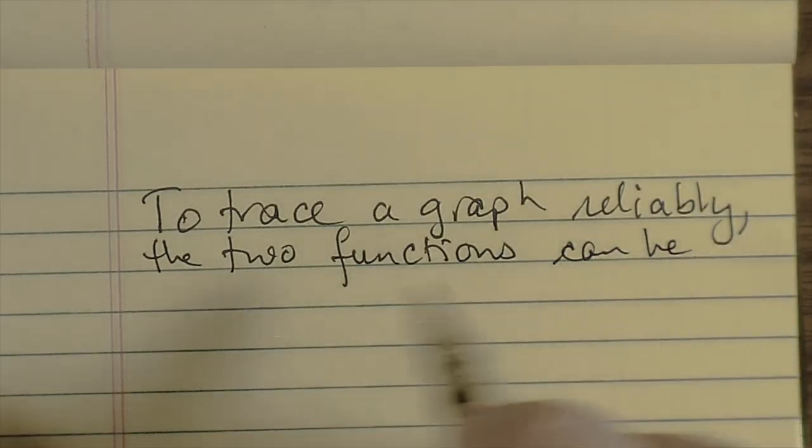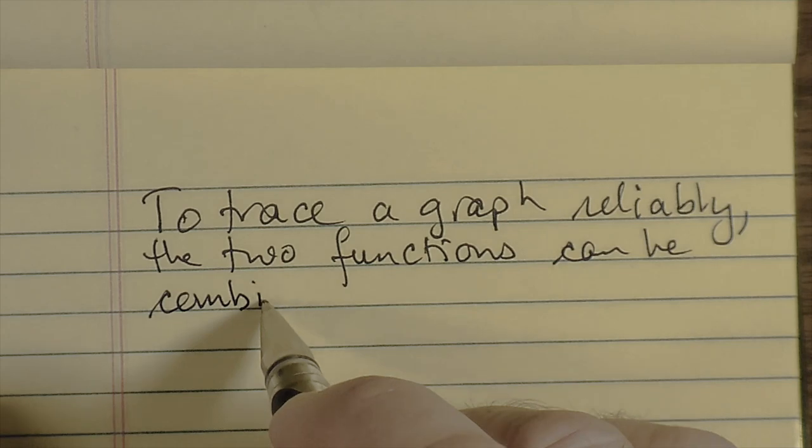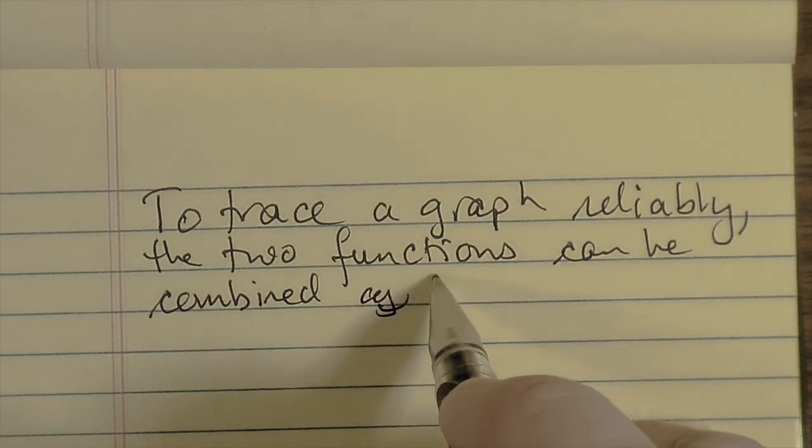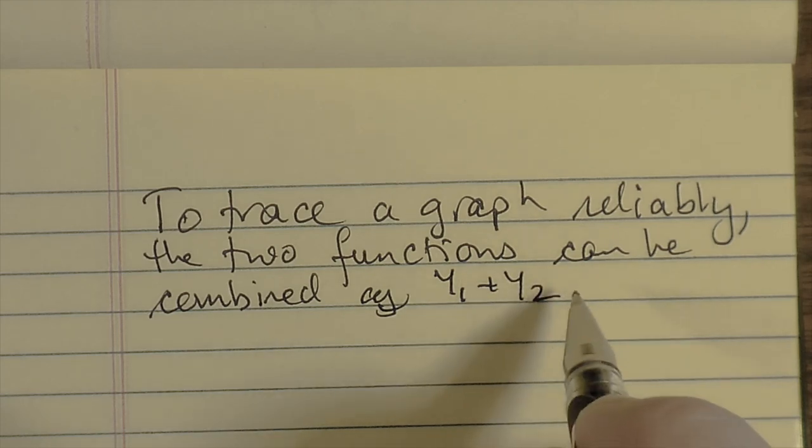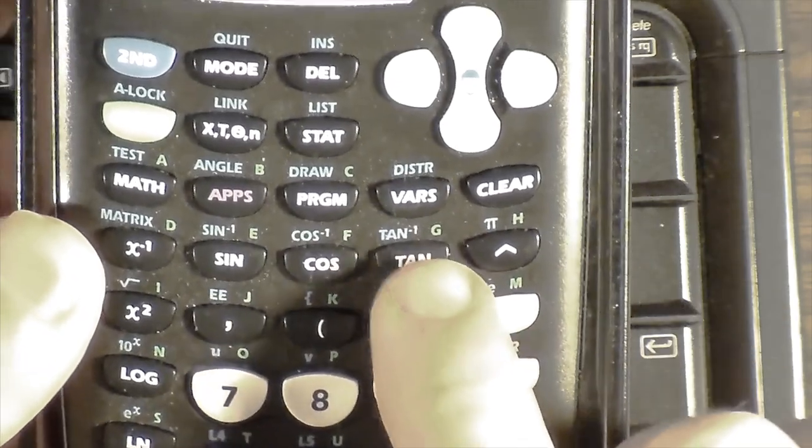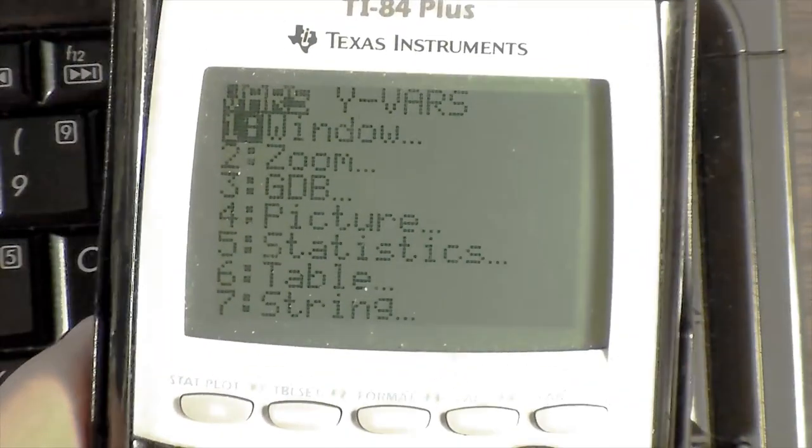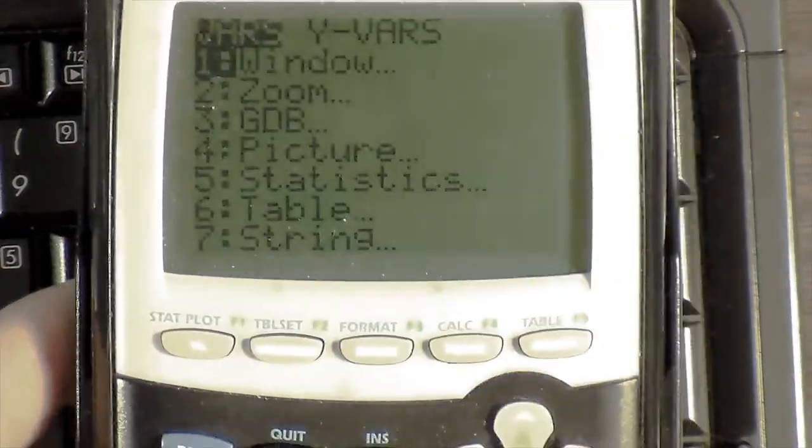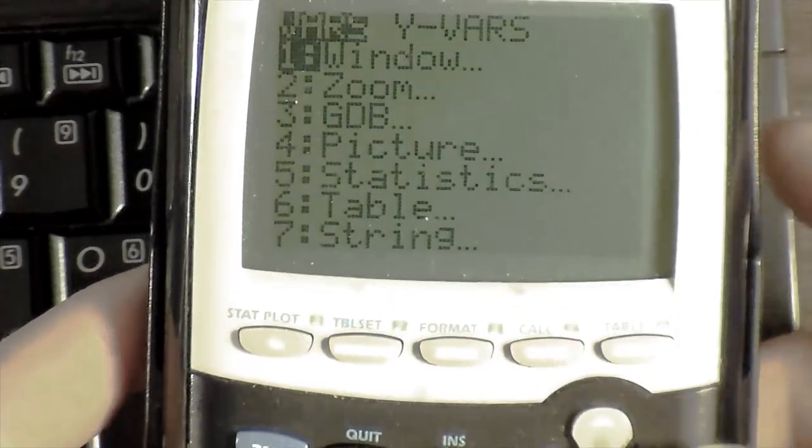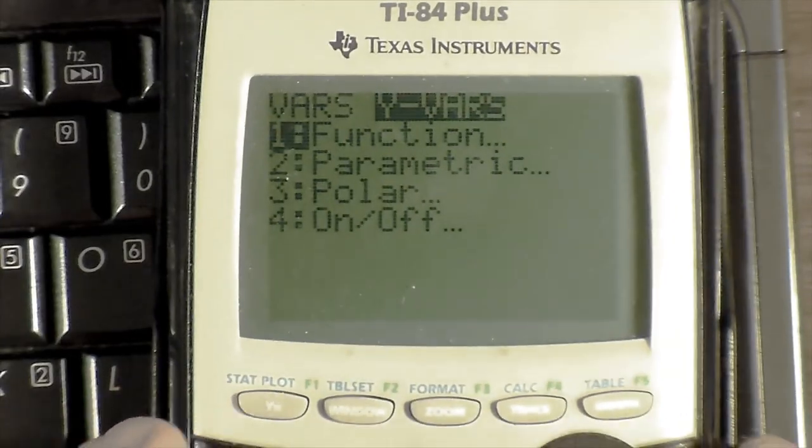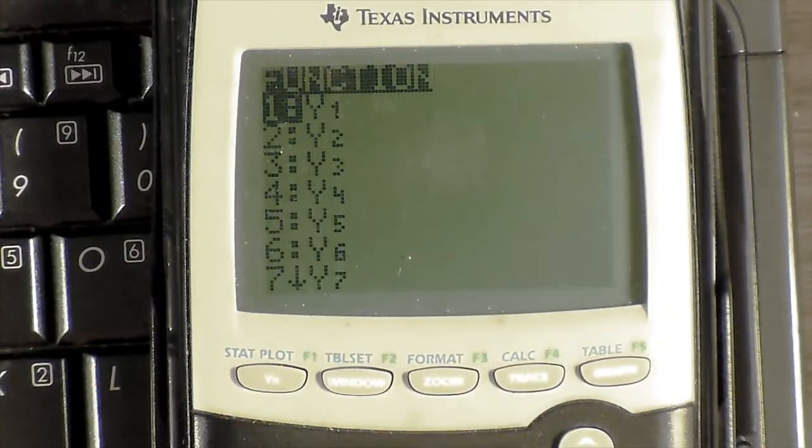So to trace a graph reliably, the two functions can actually be combined into Y1 and Y2, or actually Y1 plus Y2 to be precise. There's a VARS key below the arrow keypad. And when you hit VARS, you get this menu. We want to go over to YVARS, that's the second set of menus. We do this by pressing the right arrow key. And we select 1 for function, and then 1 for Y1.